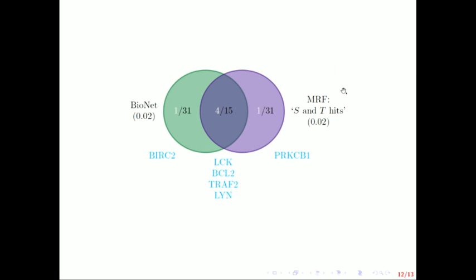Here is just a Venn diagram where these are the same hit list, so this is the same information. We've got Bionet, S and T hits, so you can see that enrichment is in the intersection of those hit lists.